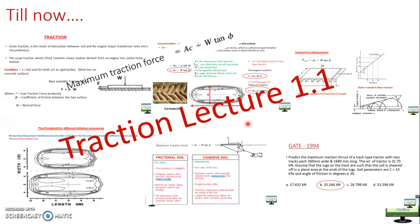Cohesion is the intermolecular force of attraction between two same types of molecules. You might have seen Fevicol — it is called an adhesive because it binds two different surfaces. Here we are talking about cohesion force, which means the intermolecular force of attraction between two same types of soil particles. Clay soil is used to make mud houses and bricks because it has high binding capacity — high cohesion force.